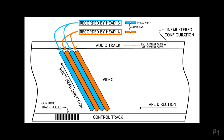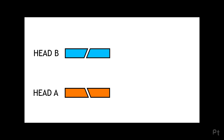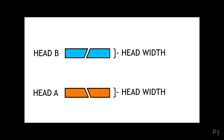Before showing all the different types of head configurations, a quick background: these heads read the video tracks on a videotape, shown in orange and blue on screen. The control track at the bottom and the audio track at the top for linear audio are unrelated. We are concerned with the video heads themselves. There are two properties: the head width and the head gap. The head gap on each opposing head is at an opposing angle, or azimuth — in the case of VHS, plus six degrees and minus six degrees — basically to eliminate crosstalk between the two adjacent tracks.